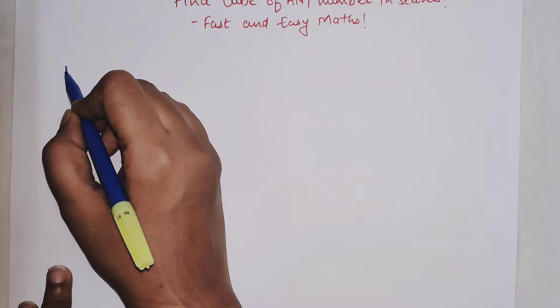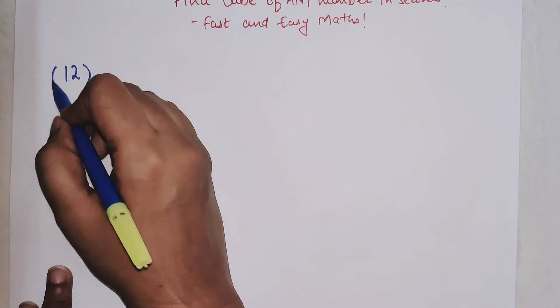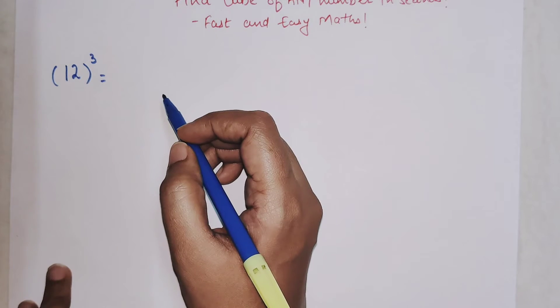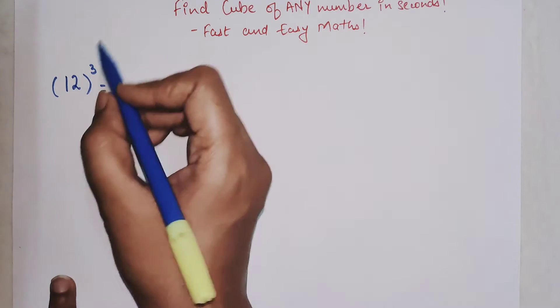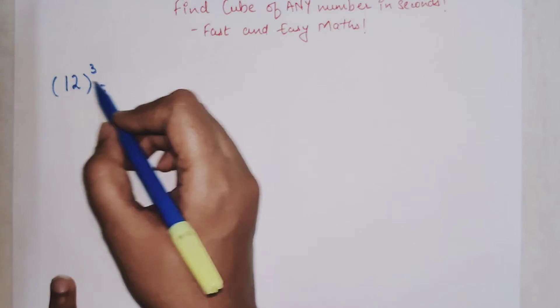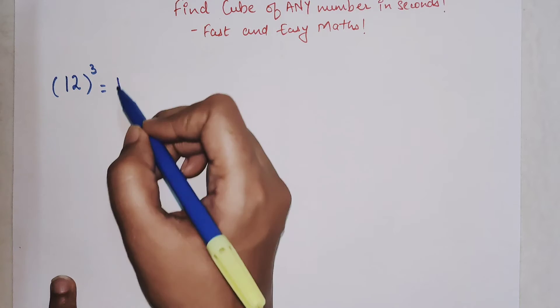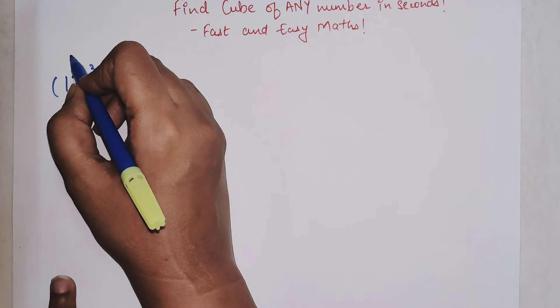All you have to do is remember this: one will be written as it is, and the second number or the unit's digit number will be taken as b. So this is like b, and the second thing will be b square, and then it will be b cube. Here what you should be doing is one, then b is what? Two. So two, two square will be four, and two cube will be eight.